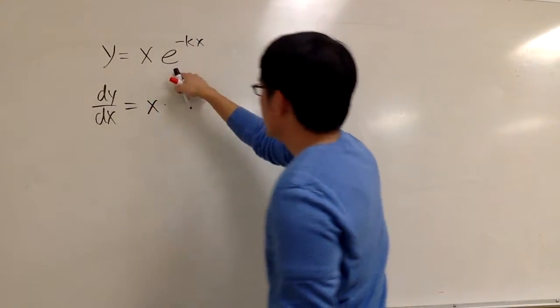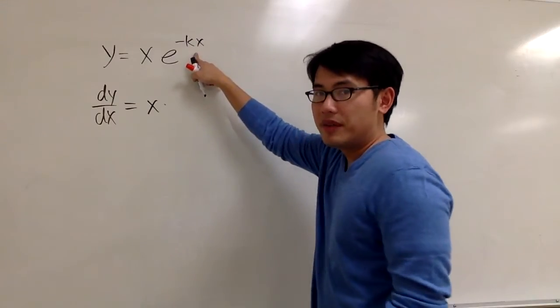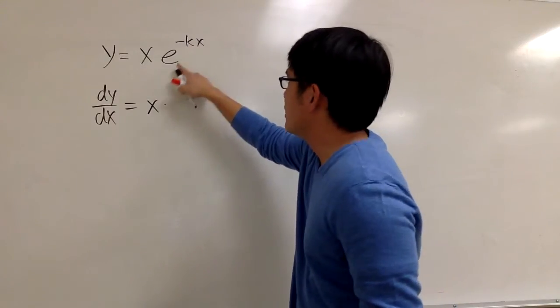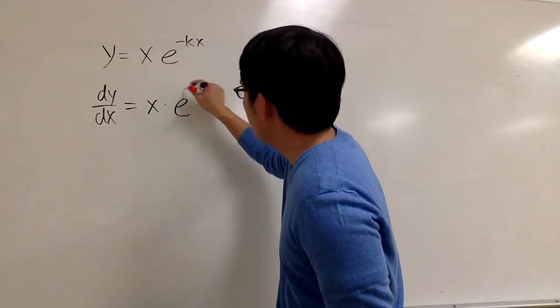And we multiply by the derivative of the second, and the derivative of e to the something, you just first repeat, it's e to the same thing, e to the negative kx.